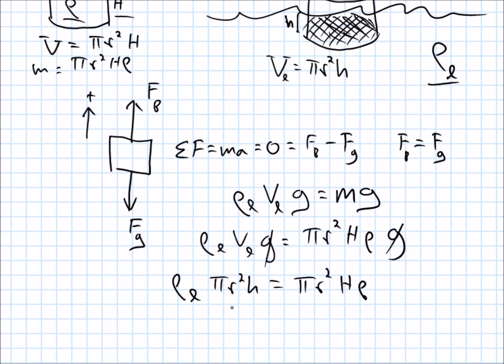We can get rid of some pi r squareds here. Didn't even need to know the radius. And I was looking for little h, right? So little h will equal, if I divide over, it'll equal the total height of the object times the ratio of the density of the object to the density of the liquid.